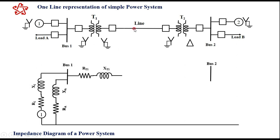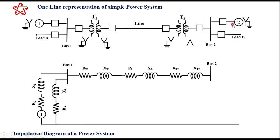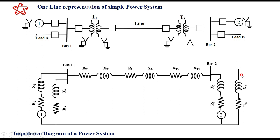The transmission line is represented by its resistance and reactance. Transformer T2 is represented by its equivalent resistance and reactance. Then there is bus 2, from which two components connect: generator 2 and load B. Generator 2 is modeled with a voltage source, resistance, and reactance. Load B is represented by resistance RB and reactance XB. This is how the impedance diagram is drawn from the one-line diagram — a detailed per-phase representation of each component with its equivalent circuit.